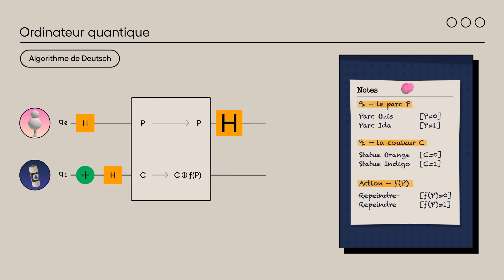Il ne vous reste qu'à appliquer une porte Hadamard sur la position de la statue. Si la statue est au parc Osis, c'est Constantin qui a fait le coup. Sinon, c'est Equilibria.